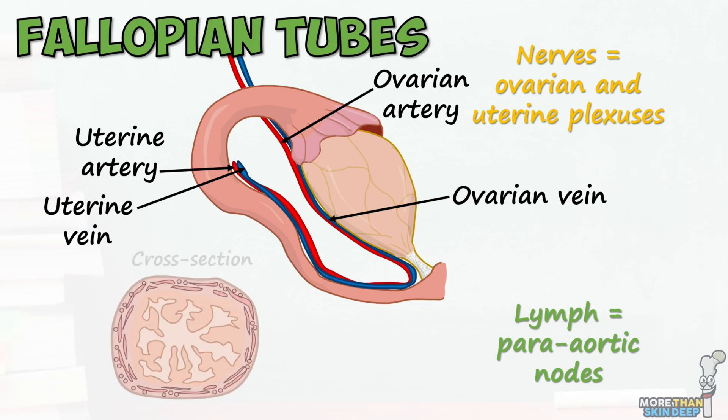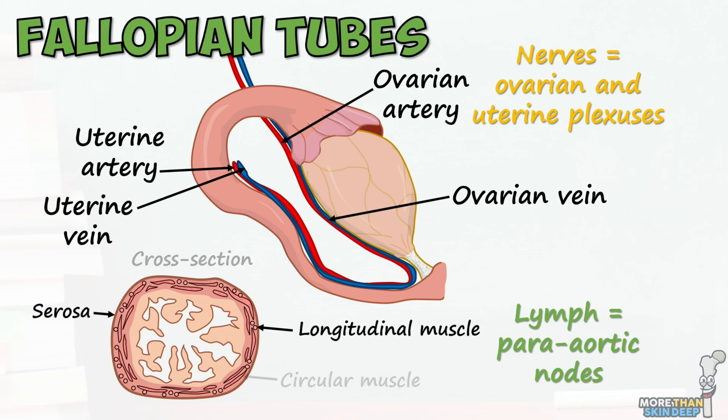In cross-section, we can see the fallopian tubes have an outer serosa, followed by longitudinal and circular muscle layers, a connective tissue layer, and finally a highly-folded ciliated epithelium which lines the lumen.